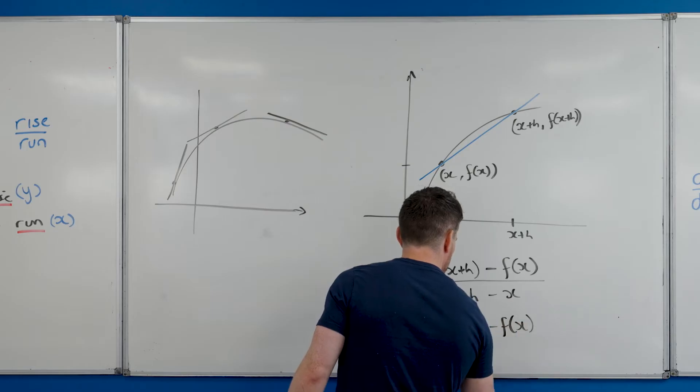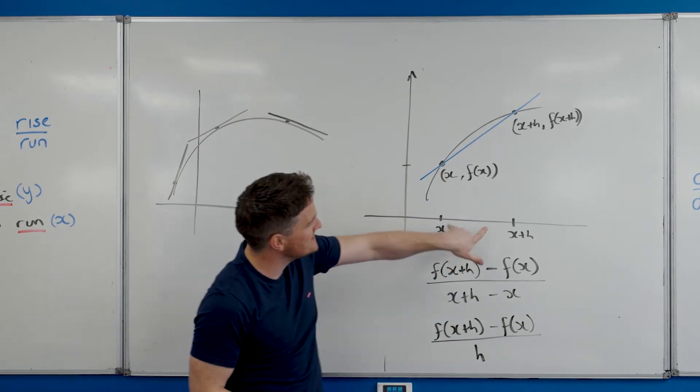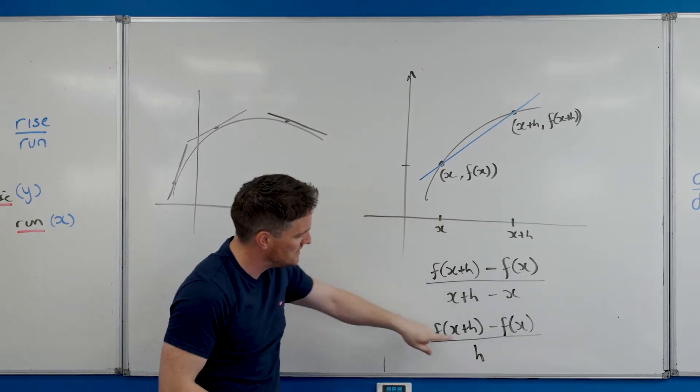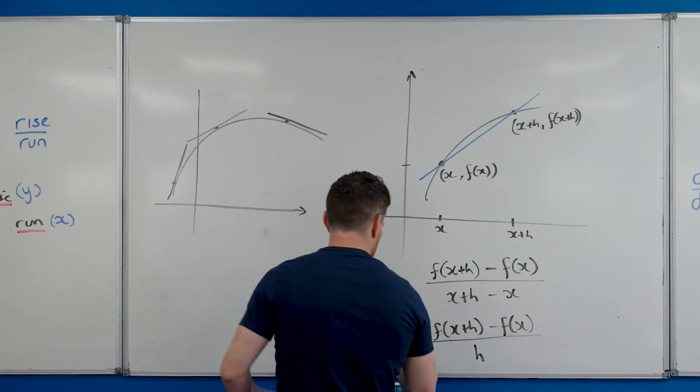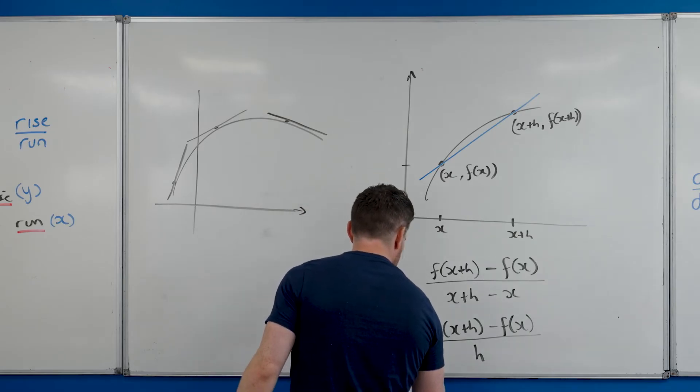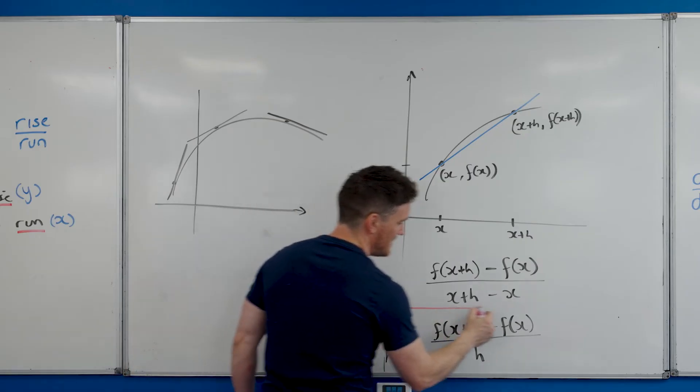Now what we're going to do to find the slope at a particular point is we're going to make this distance h super small, practically zero. So we're going to say let h be zero, and the way we do that is we say we take the limit of h as it tends towards zero.